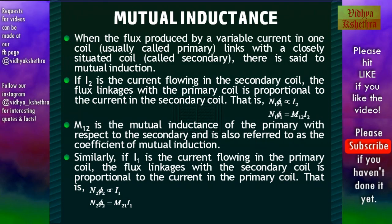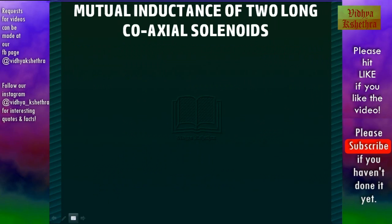Similarly, if i1 is the current flowing in the primary coil, the flux linkages with the secondary coil is proportional to the current in the primary coil. That is N2*phi2 will be proportional to i1, and N2*phi2 = M21 * i1. Here M21 is the mutual inductance of the secondary with respect to primary.